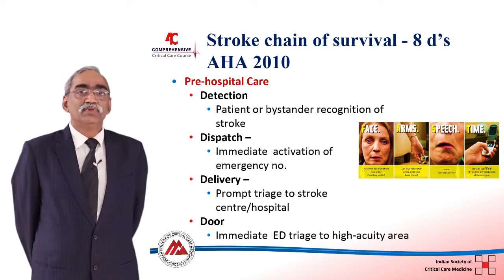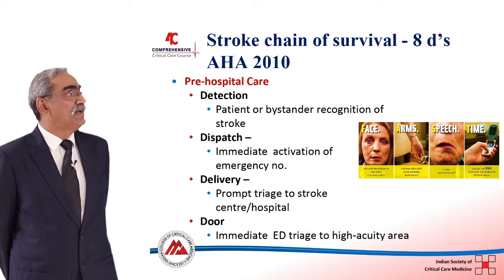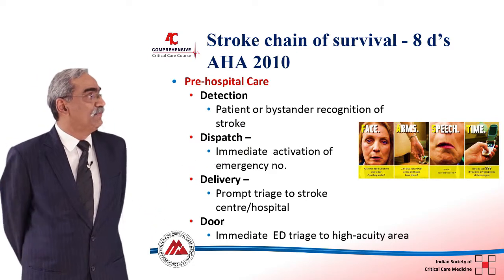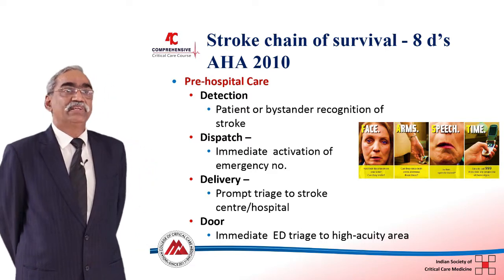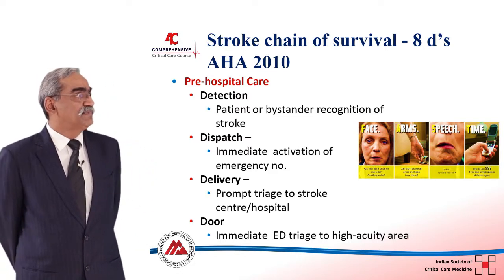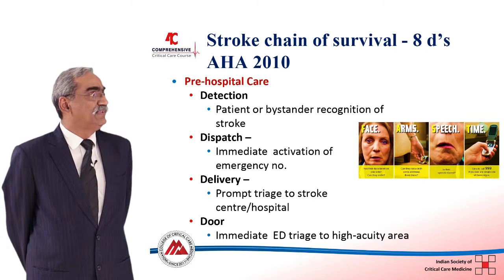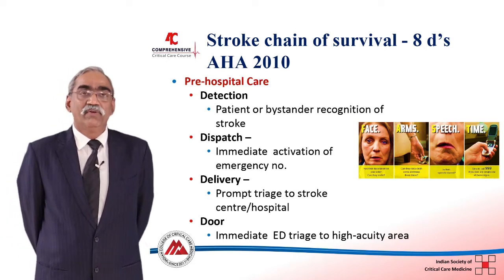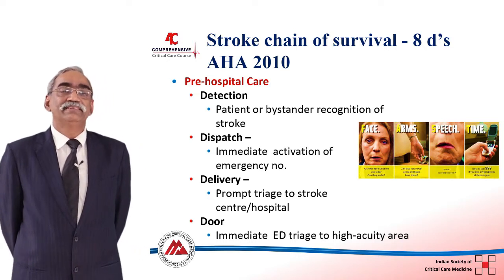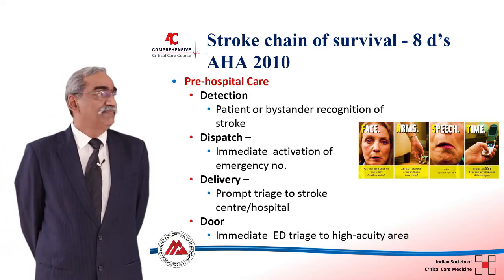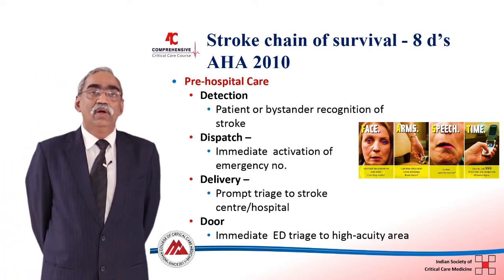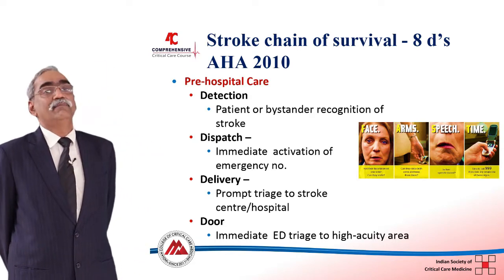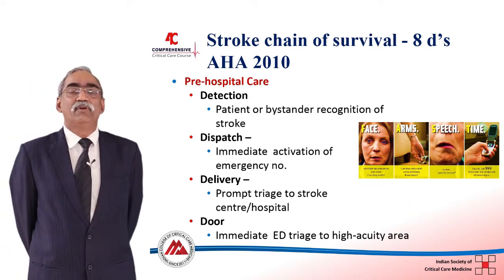The scale which is used is called FAST — face, arms, speech and time, as can be seen in this cartoon. In the face you look for deviation of the angle of mouth and any facial asymmetry. In the arms you see if there is any arm drift or if they are not able to do certain simple things with their arms. Then check the speech to see if there is any slurring or speech difficulty, and most importantly you need to measure the time of onset.